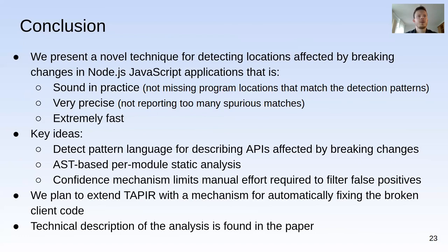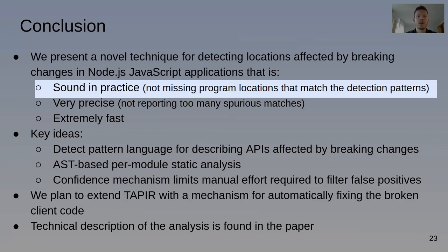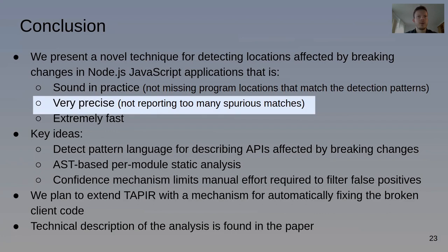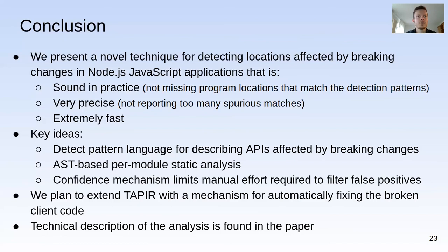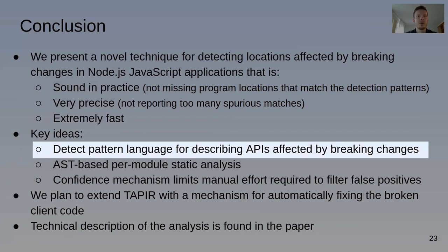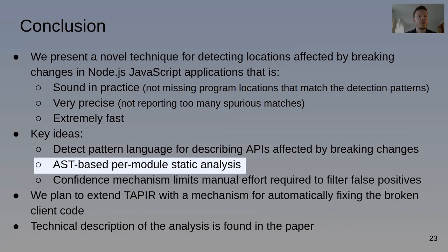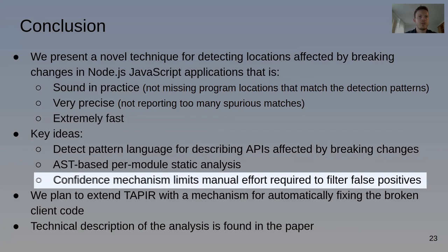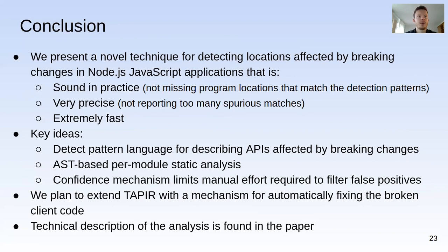To conclude, we present the first technique for detecting source locations in Node.js JavaScript applications affected by breaking changes when updating a dependency. Our technique finds all affected source locations and is therefore sound in practice. Precision is above 85% and running time is around one second per client. The key ideas are a novel detection pattern language, an AST-based per-module static analysis that scales to large applications, and a novel confidence mechanism that limits the alarms the user must manually examine. We plan to extend Tapir with a mechanism for automatically fixing broken client code.